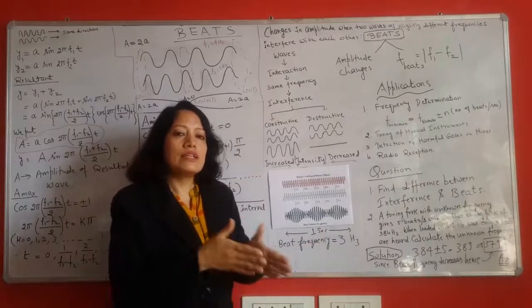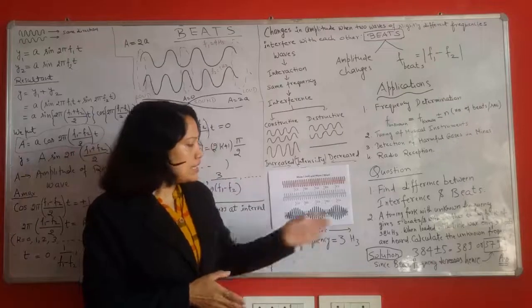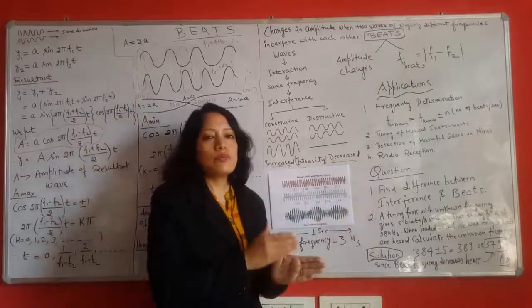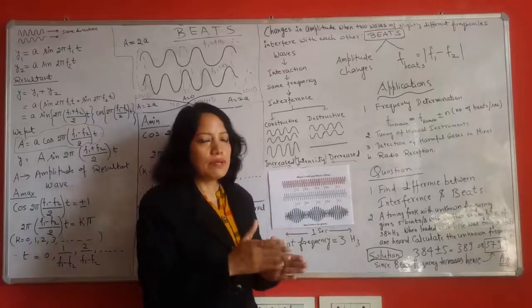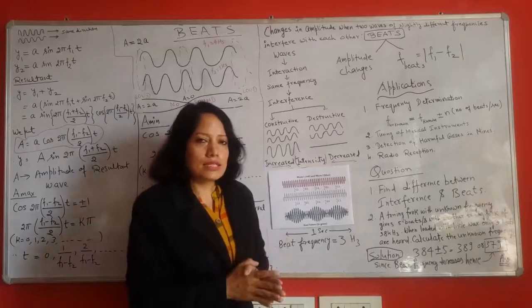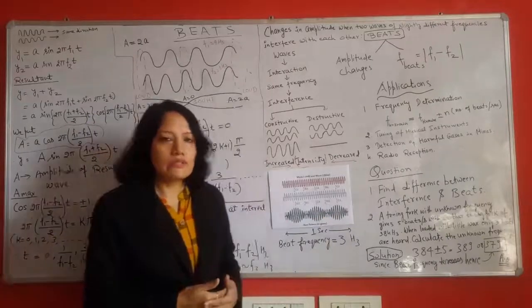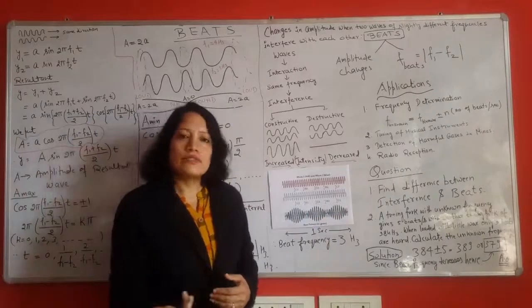But in beats the waves must travel in the same direction. Similarly in interference there are fixed points of maxima and minima. In beats this is not the case. There are so many other differences which you may find in various literature available.